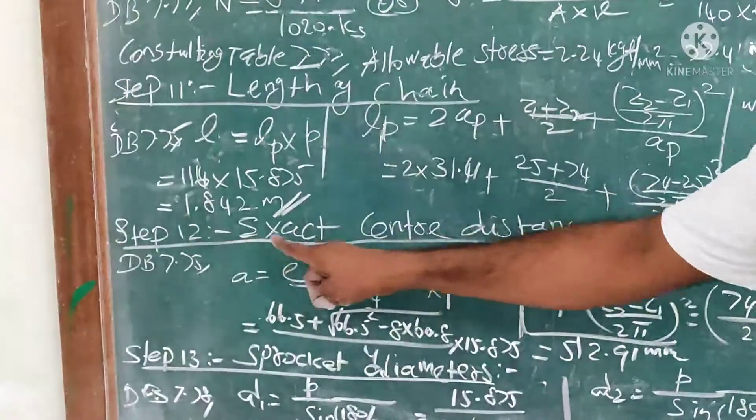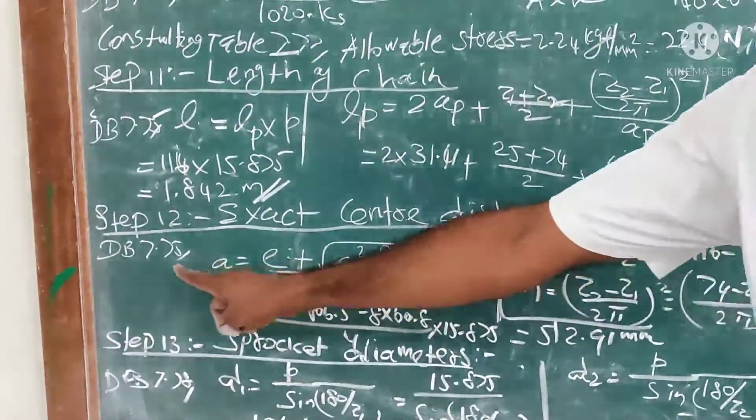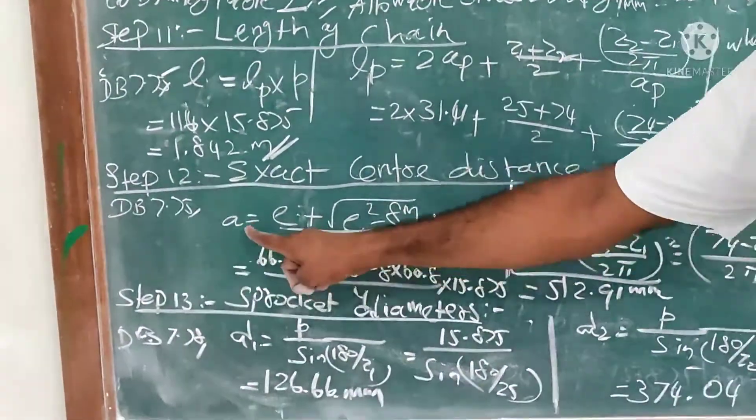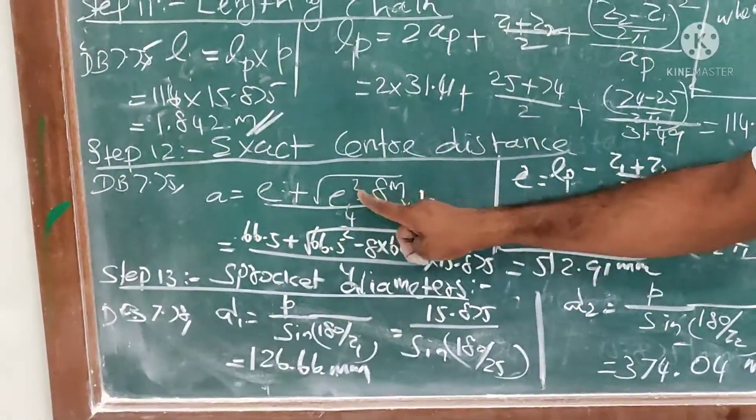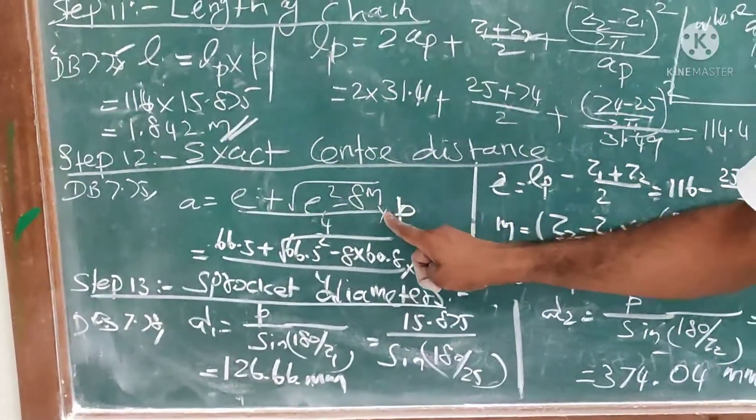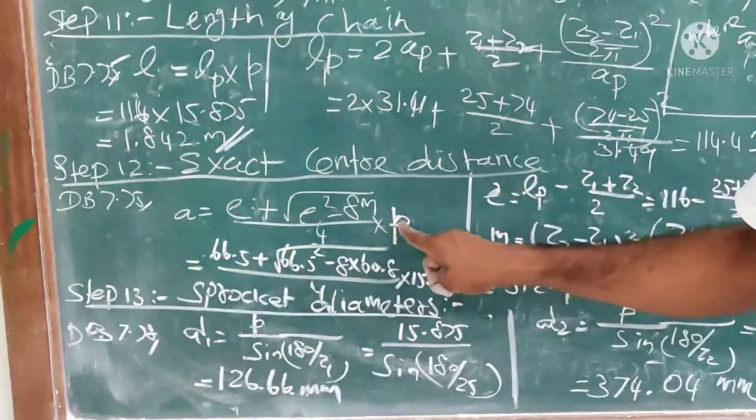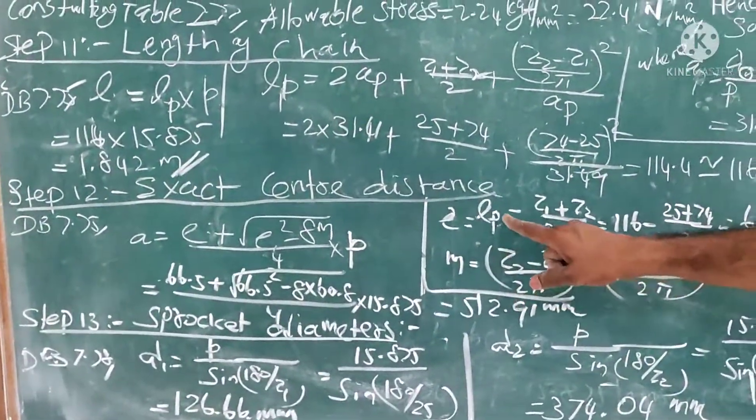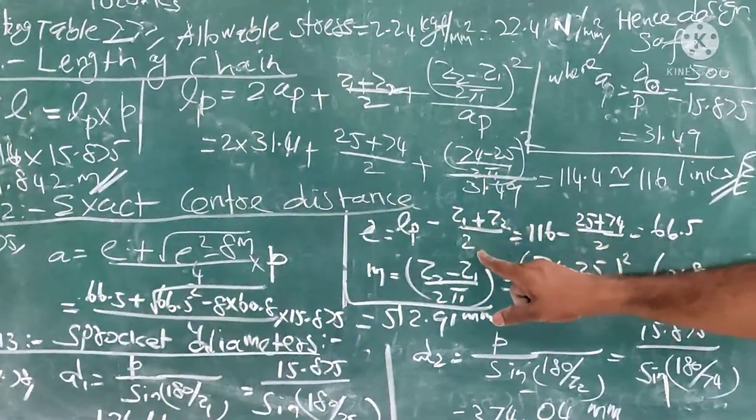Step number 12: exact center distance. We have formula in 7.75, A = [E + √(E² - 8M)]/4 × P, where E = LB - (z1 + z2)/2.